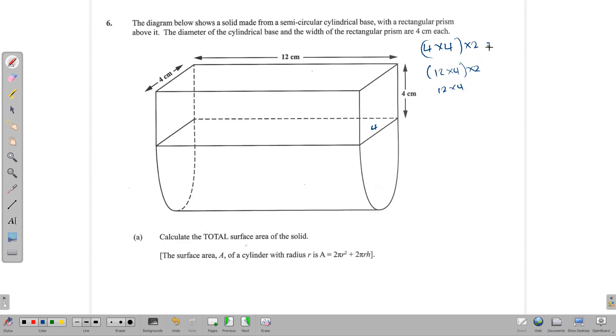So that gives us 4 times 4, that's 16 times 2, 32. Then 12 times 4 gives us 96 and 48. And adding up all of those, we end up with 176 centimeters square.